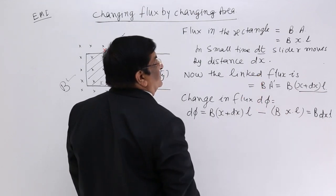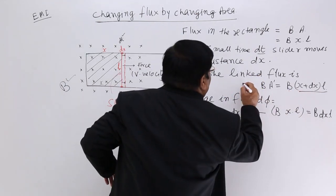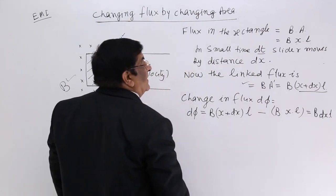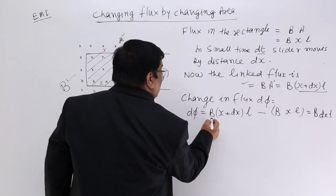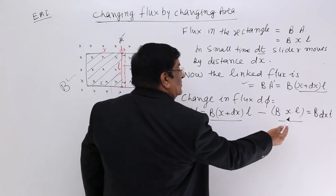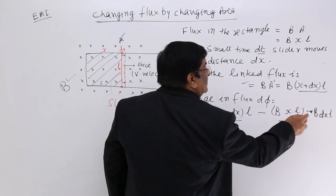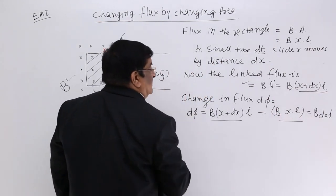Now, the linked flux is the new area, this is the linked flux. What is the change in the flux? New flux minus old flux. When you do this, minus BxL is cancelled. What do we get? B dx into L. This is the change in flux.